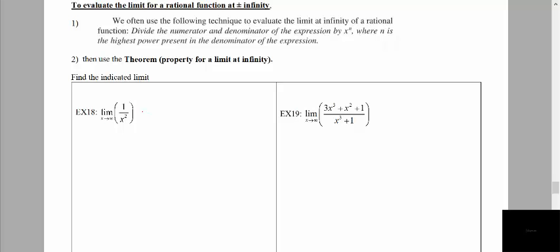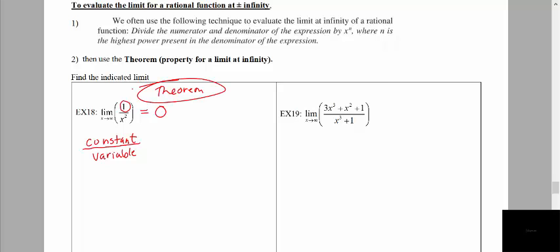Example 18 is already written as a very simple fraction: 1 over x squared. Using the theorem, we have a constant of 1 in the numerator — no variable at all — and in the denominator a variable raised to the power of 2. The presence of the variable increasing without bound going towards positive infinity implies that the limit of this function will be 0. This is a straightforward application of the theorem.